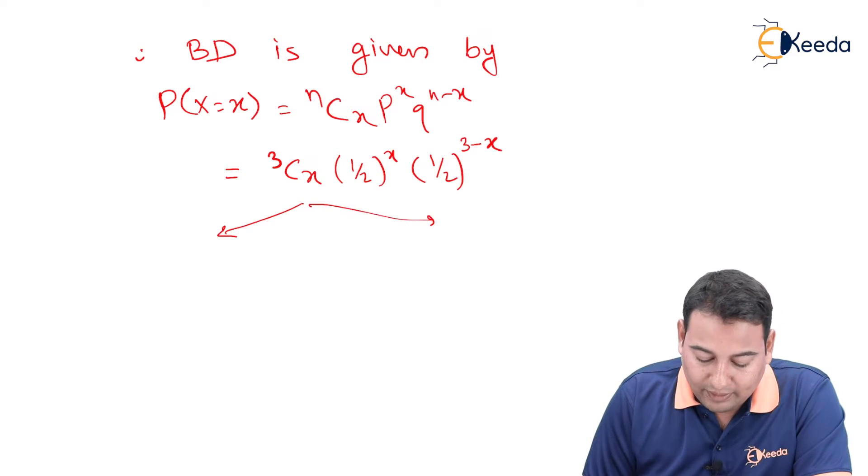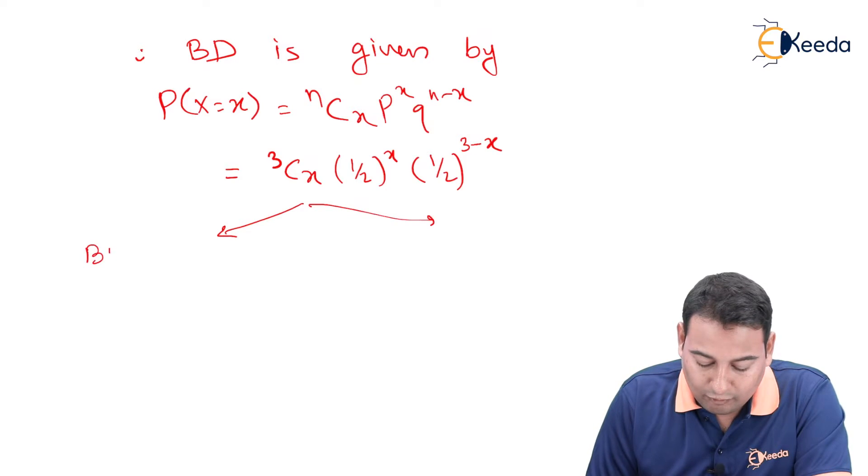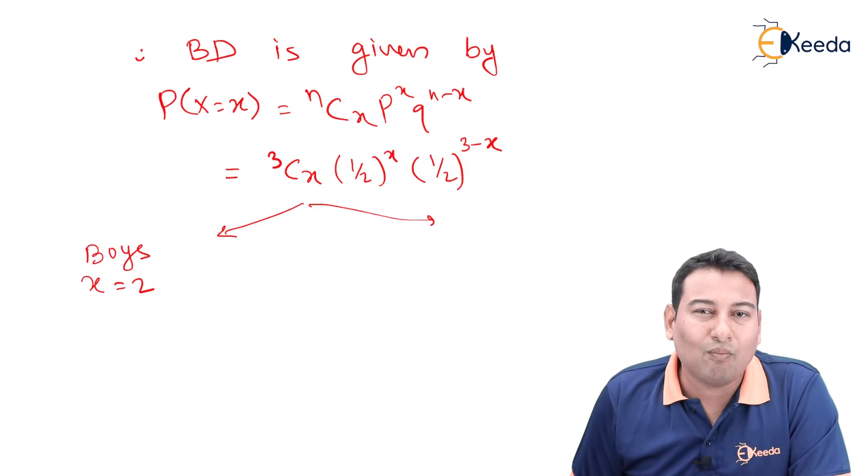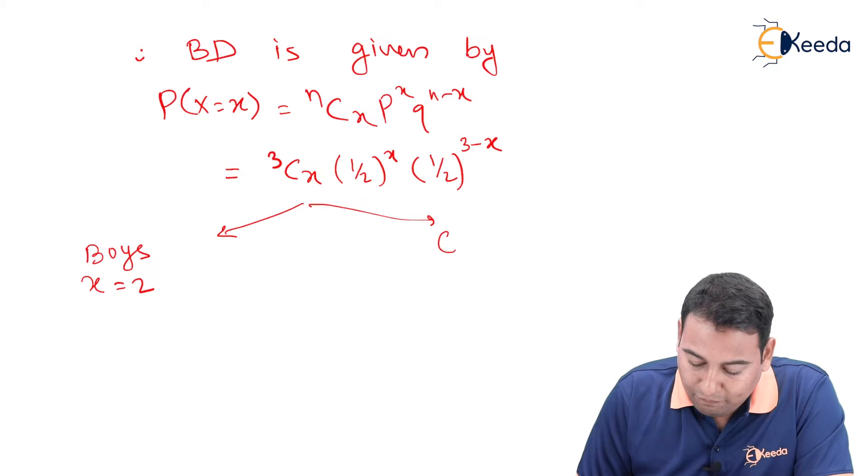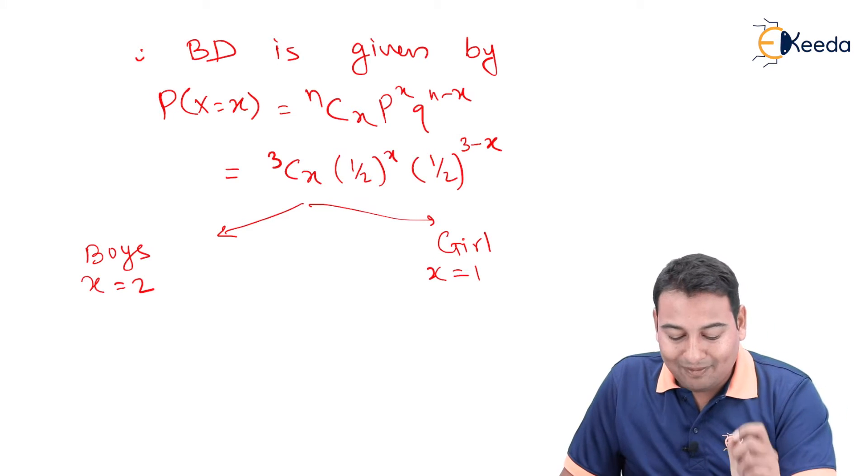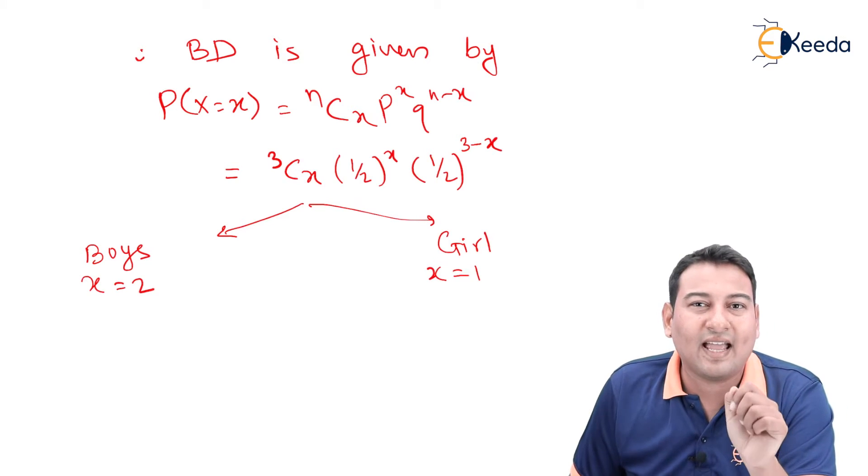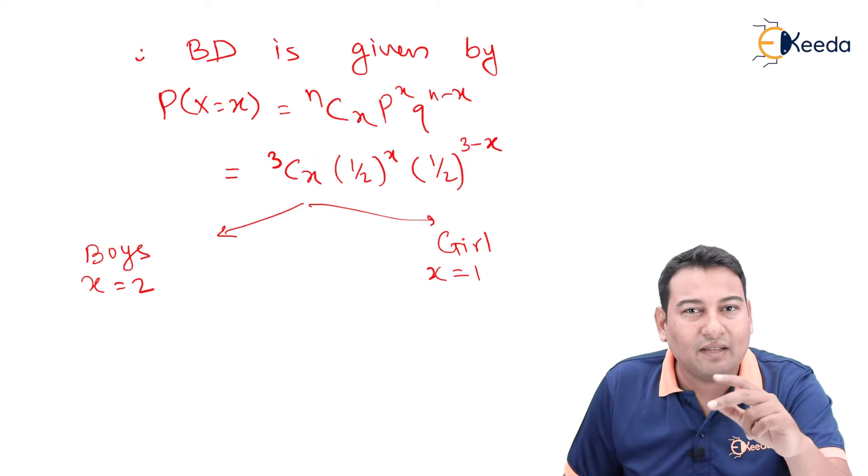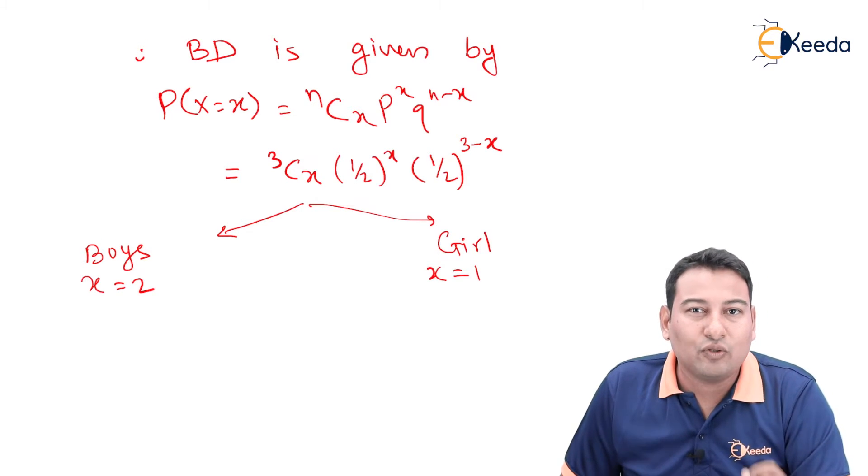You can solve this in two ways. Few people will think boys is success, then you need to put x equal to 2 because they will be talking about boy. And if people think girl is success, then they can put x equal to 1 because probability of success and x, x is the number of successes and P is probability of success, they will always be related.